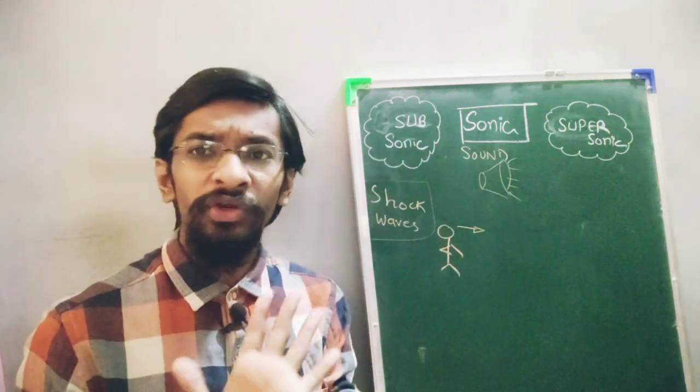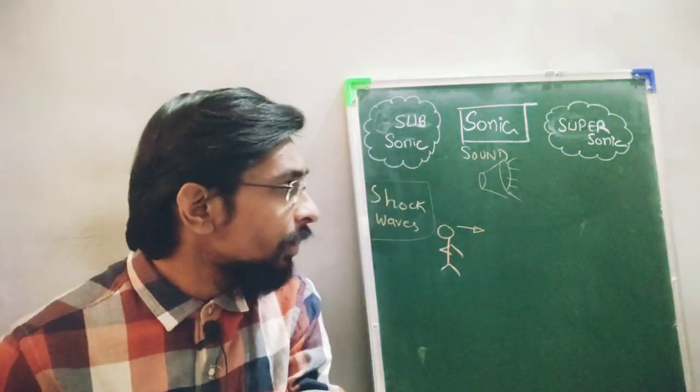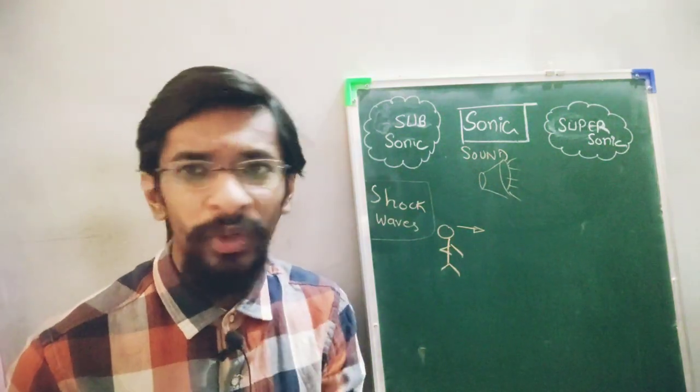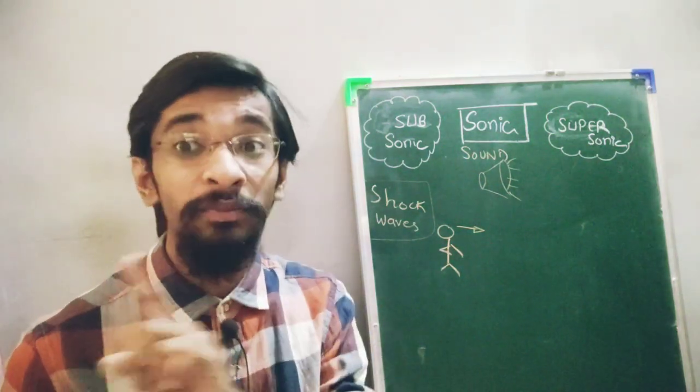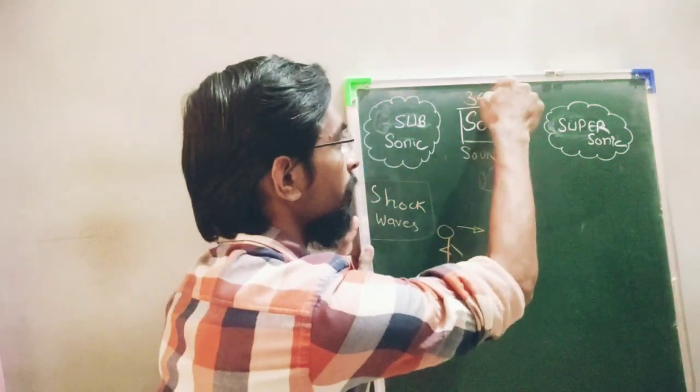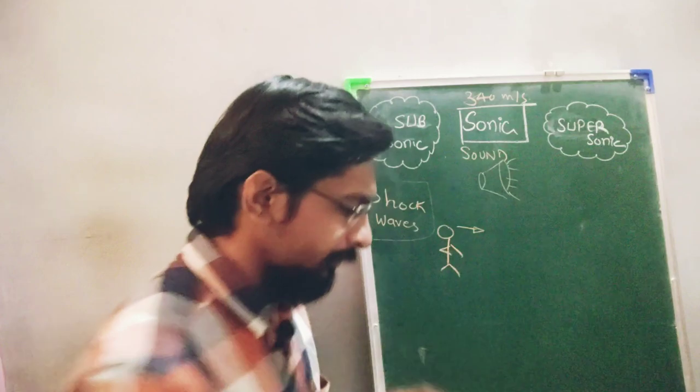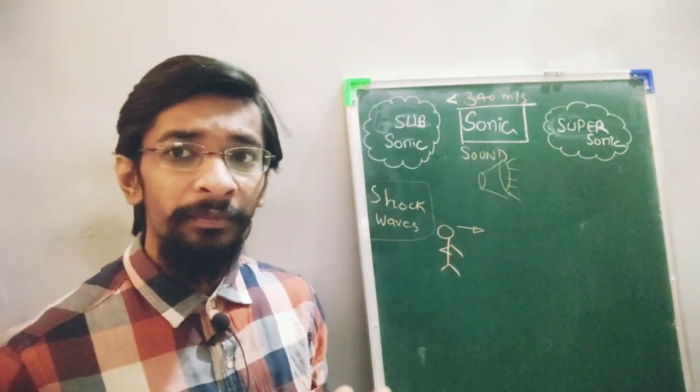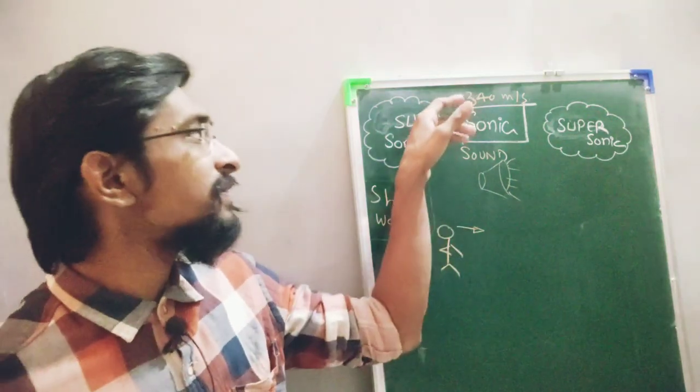Of course it depends on density and many other parameters, but generally let us consider 340 meters per second as the speed of sound. Now if some body or object is moving with a velocity which is less than this 340 meters per second, that will be termed as subsonic.